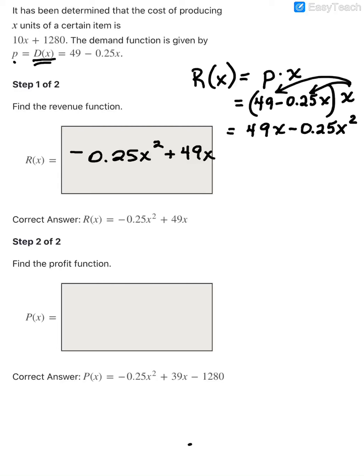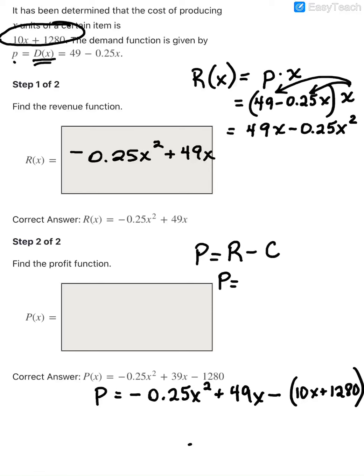Profit is calculated by taking your revenue minus your cost. In this case, if I take the revenue function that I found in the first part, my revenue function was negative 0.25x squared plus 49x. And then I subtract my cost, which they gave me right up here. That's the cost of producing x units. So 10x plus 1280.